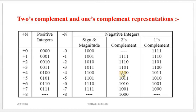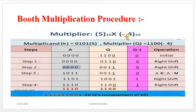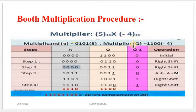And −4 in two's complement is represented as 1100. Now we are going to perform the steps. In the table, we have the accumulator A, Q which is the Multiplier, and Q minus 1 which is the 1-bit register.